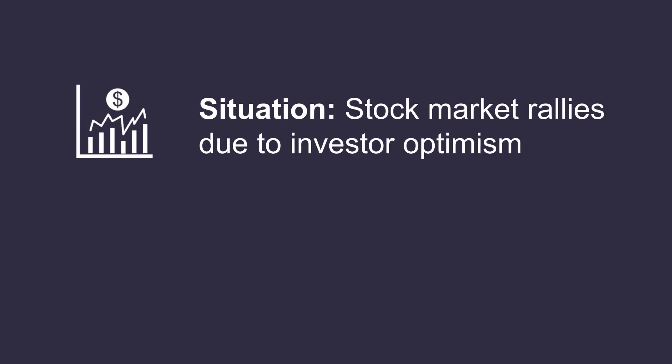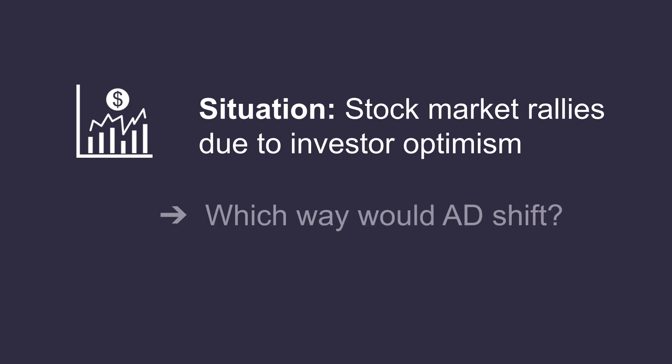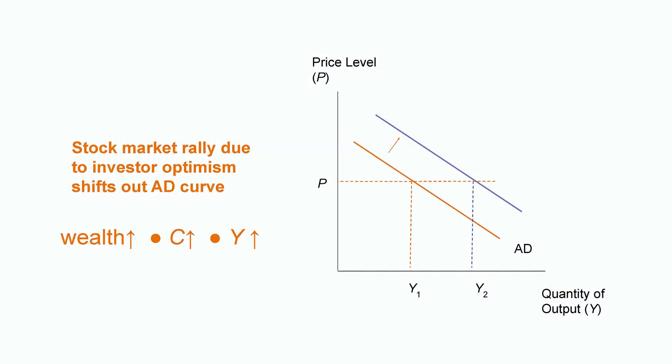For example, suppose the stock market rallies because investors are feeling optimistic. Anyone who owns stocks would now be wealthier, even if the profits are not realized. Given the newfound wealth, investors will want to consume more, and that increases output Y. Note that the increase in consumption and therefore output is due to an increase in wealth from rising stock value, not a change in price. Since stock value is an exogenous variable, it is not on the axis of a graphical model. This economic event will shift the aggregate demand curve. For any given price level, people consume more because of rising stock value, so C is higher and Y is higher at every level of P. This must be an outward shift of aggregate demand.